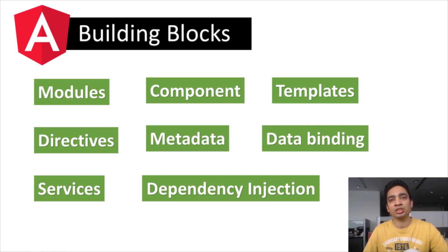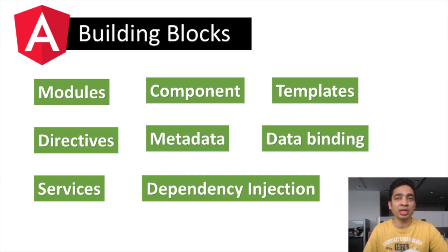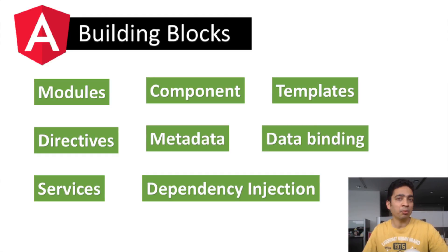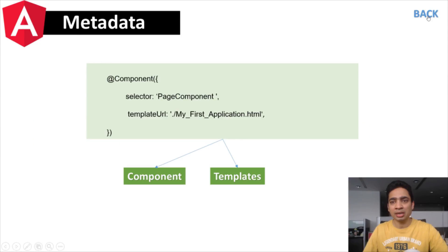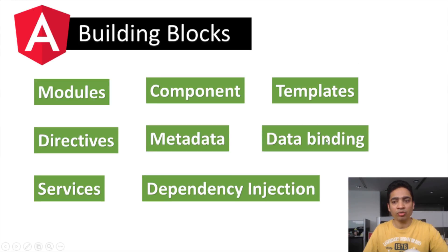Metadata is used to decorate a component class to set its expected behavior. To connect a component class to its HTML template, we use metadata. Without metadata, the component class is just a plain class. Once you add the `@Component` decorator, it identifies the class immediately below as a component class. To generate a view, you need at least three building blocks: component, HTML template, and metadata.